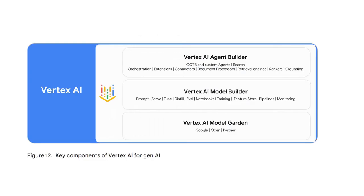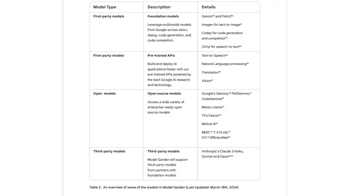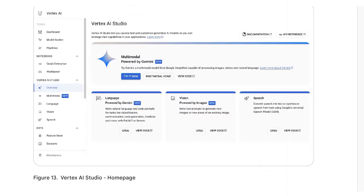Vertex AI's suite of tools and products is designed to meet the demands of Gen AI applications. The white paper explores each tool's role across the MLOps life cycle: discovery and prototyping with Vertex Model Garden, Vertex AI Studio, and Notebooks; customization through Vertex AI Training and Tuning; orchestration and augmentation with tools like Vertex AI Grounding, Extensions, and Retrieval Augmented Generation (RAG); and evaluation and monitoring using Vertex AI Experiments, TensorBoard, and Endpoints.